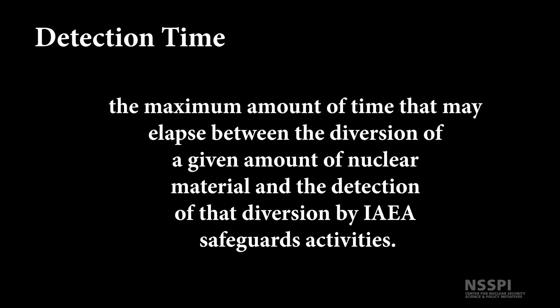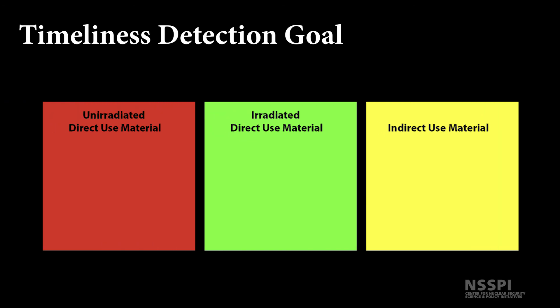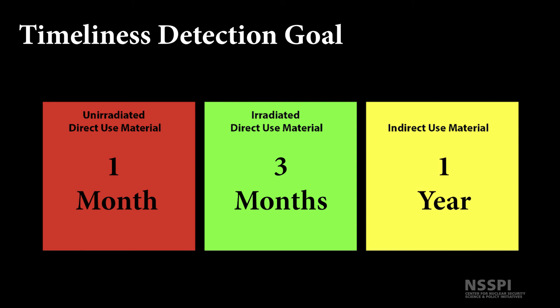Detection time is the maximum amount of time that may elapse between the diversion of a given amount of nuclear material and the detection of that diversion by IAEA safeguards activities. Detection time is one factor used to establish the timeliness component of the IAEA inspection goal. The timeliness detection goal refers to the target detection times applicable to specific nuclear material categories, and is used for establishing the frequency of inspections. Detection goals are: one month for unirradiated direct-use material, three months for irradiated direct-use material, and one year for indirect-use material.